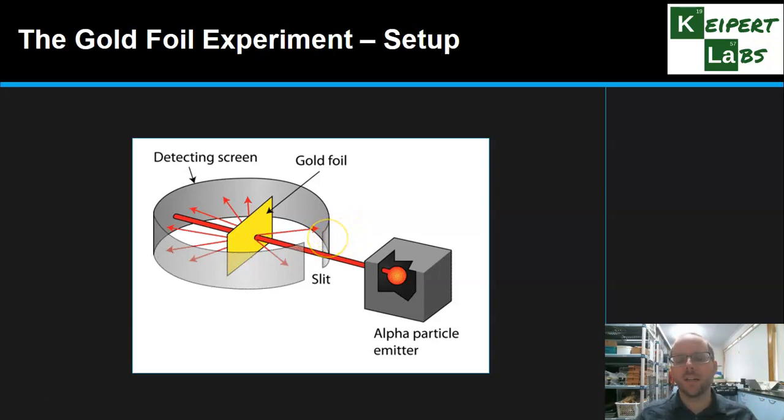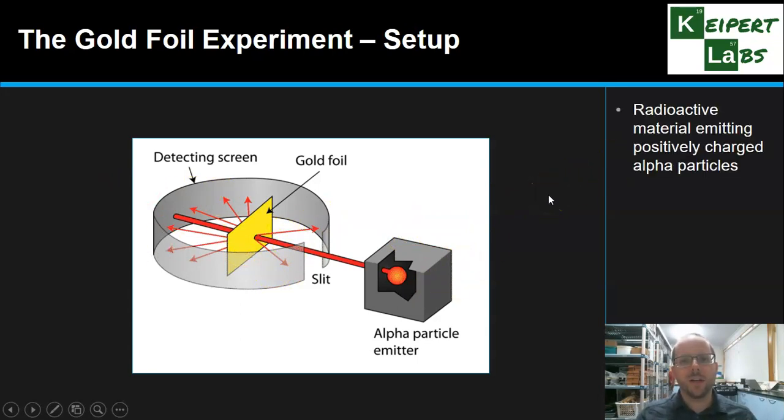Using this screen and looking at the pattern of what would happen once those alpha particles had been hitting the foil, we noticed a few curious observations. We had our radioactive material giving off those alpha particles. The gold foil was super thin that it was being fired at like a target to see what happens.